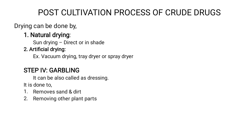The drying process can be generally divided into two types: natural and artificial. In natural drying, the plant part or unorganized drug is dried in the sun — either in direct sunlight or in shade. In artificial drying, the plant part is dried using equipment such as a tray dryer, spray dryer, drum dryer, or vacuum dryer.